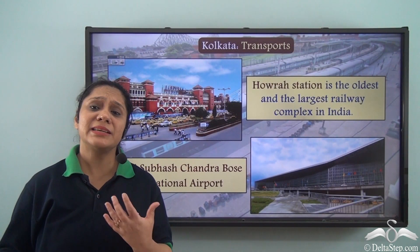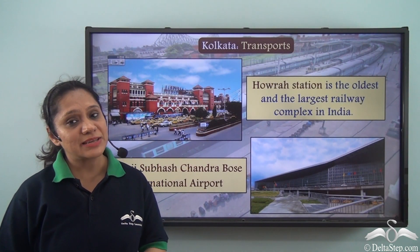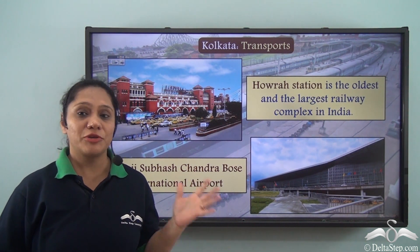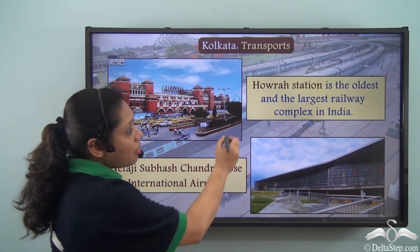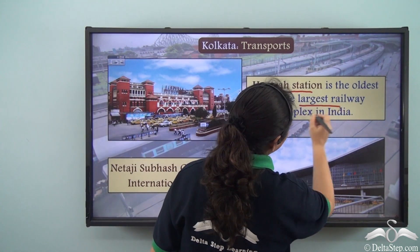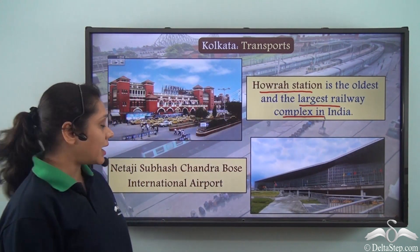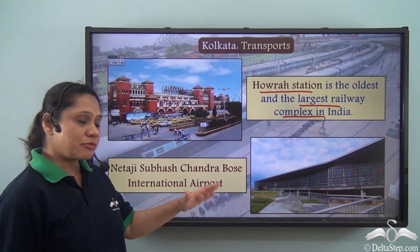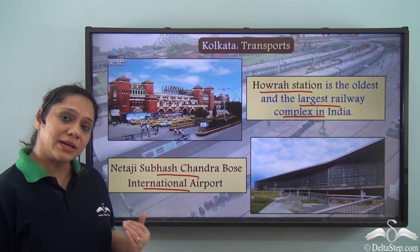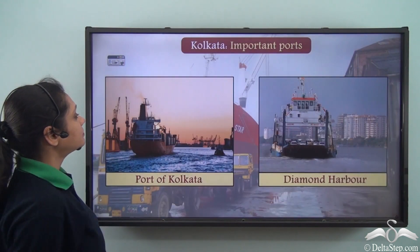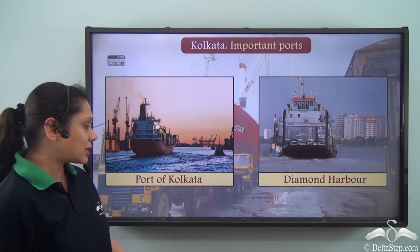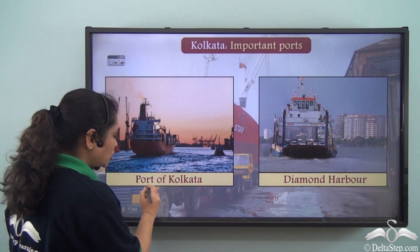Kolkata has an extensive network of railways and flights connecting it with the rest of the country and the world. The Howrah Station is the oldest and largest railway station complex in India. Netaji Subhas Chandra Bose International Airport serves the city. Kolkata also has two important ports: the Port of Kolkata and Diamond Harbour.